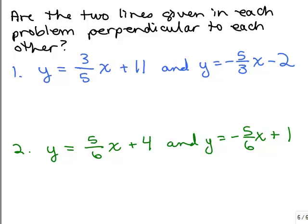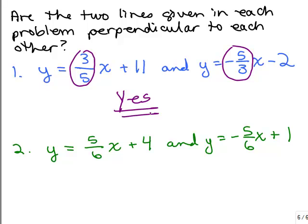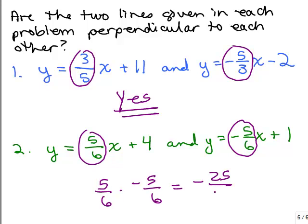Last check: are the two lines given in each problem perpendicular to each other? For number 1, you look at the slope of the first line and compare it with the slope of the other line. Is one the negative reciprocal of the other? Yes, so these are going to be perpendicular to each other. For the second one, the slope is 5 sixths and the other is negative 5 sixths. That's not the negative reciprocal — those are just opposites. So those are not perpendicular. And notice if you multiply them together you do not get negative 1; you get negative 25 over 36. So the answer is no.